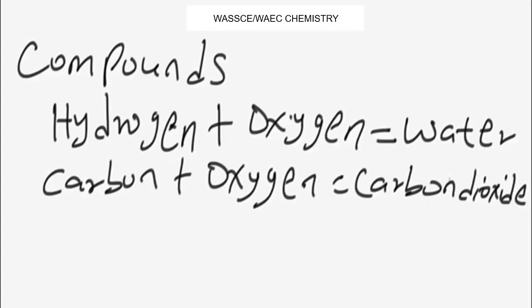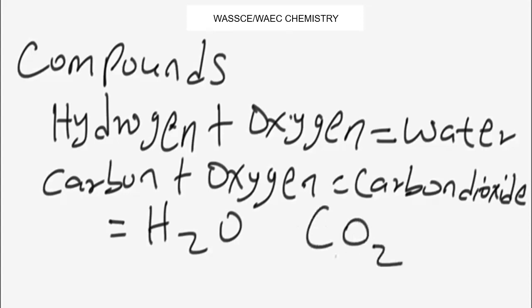Note that just as elements can be represented by symbols, compounds can be represented by formulas. The formulas are made up of elemental symbols in the same proportions that the elements are found in the compound. For example, the formula for water is H₂O, and the formula for carbon dioxide or carbon(IV) oxide is CO₂.